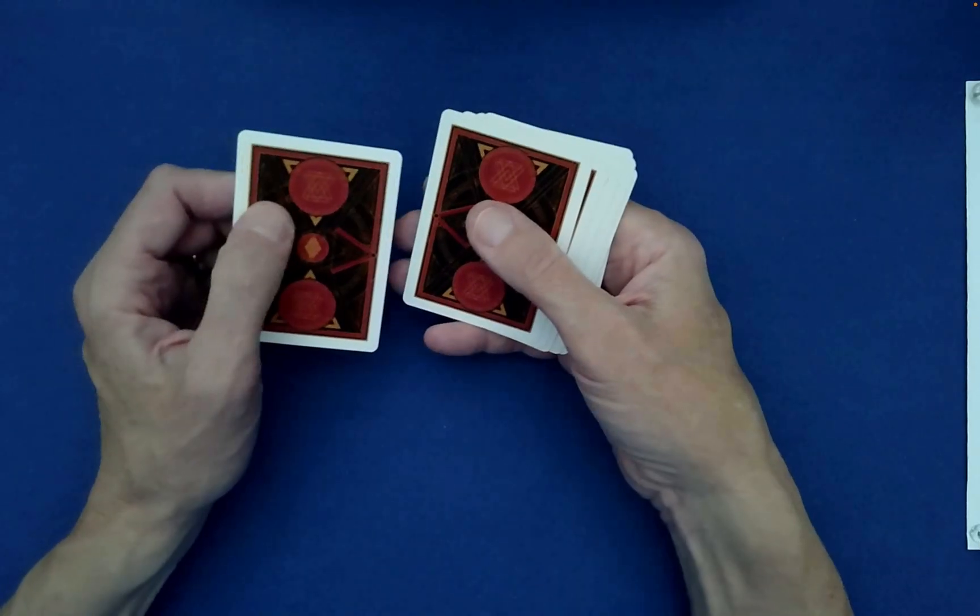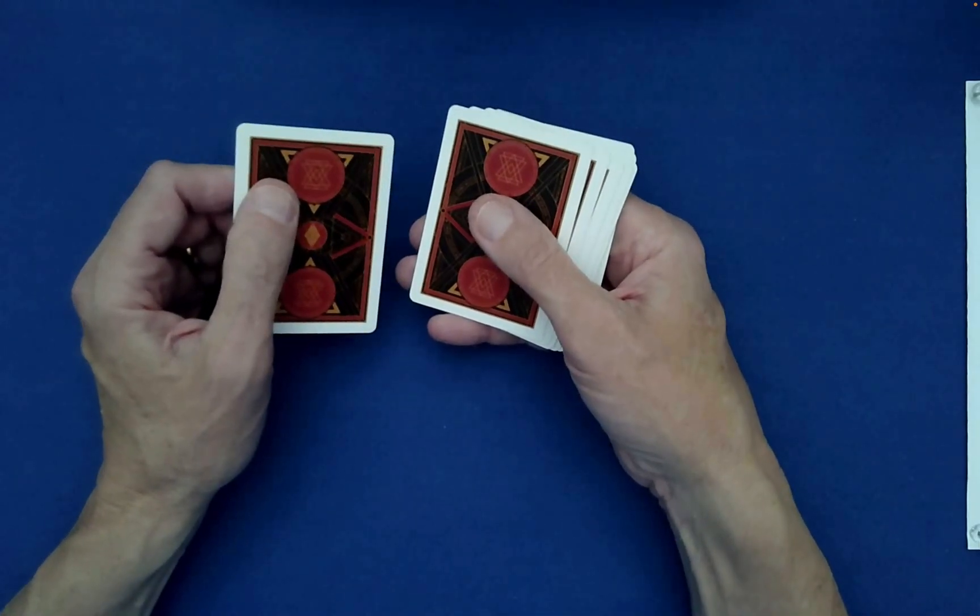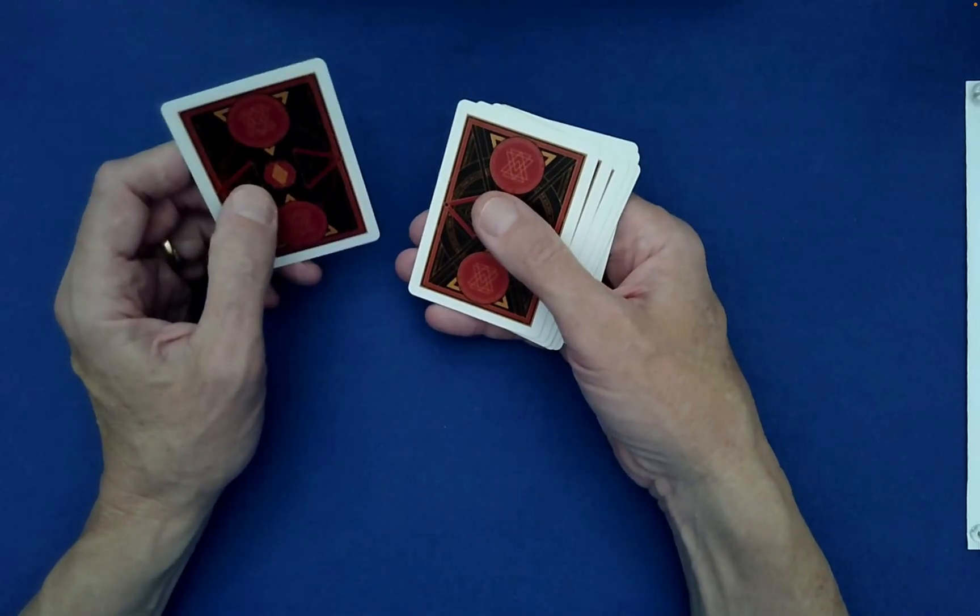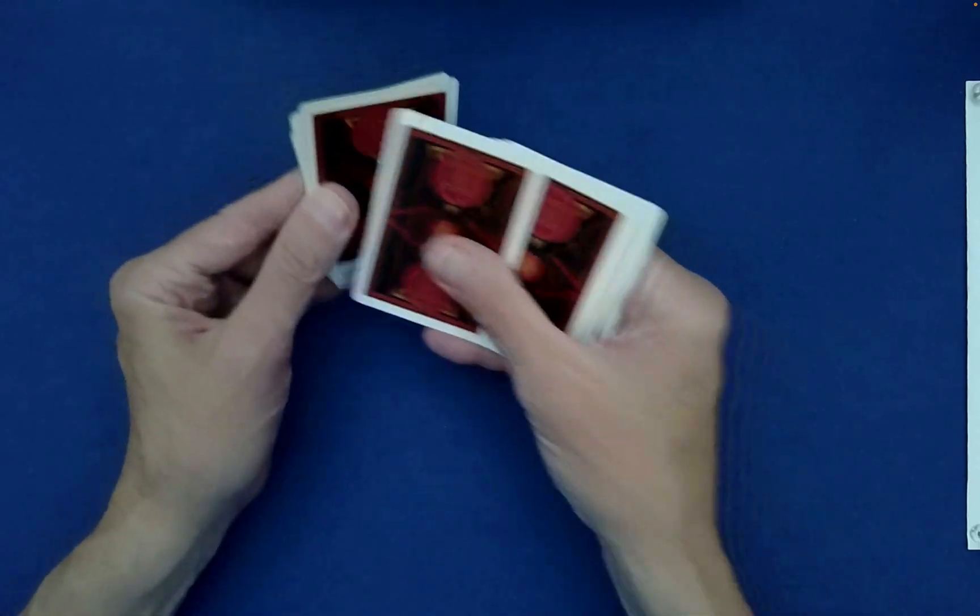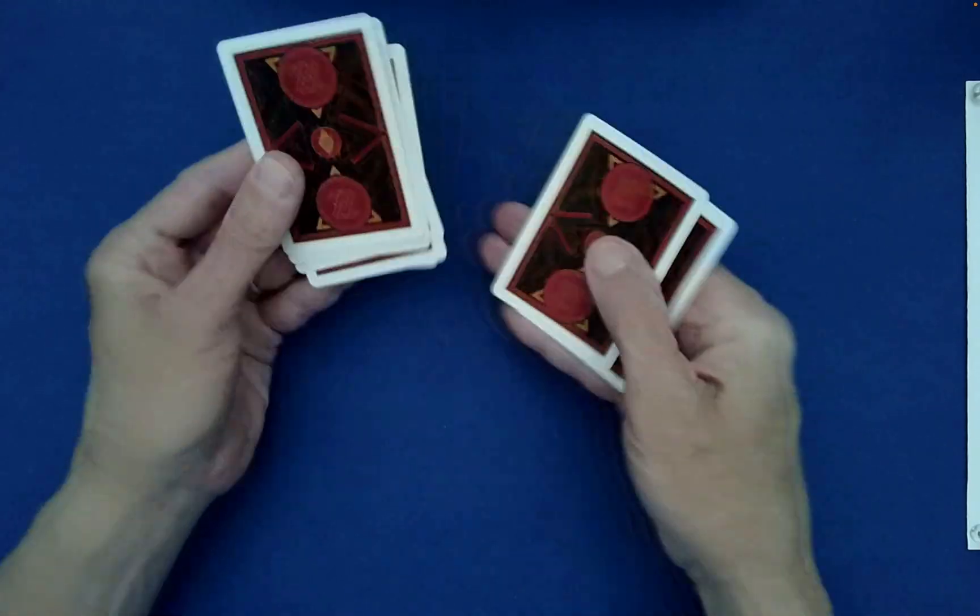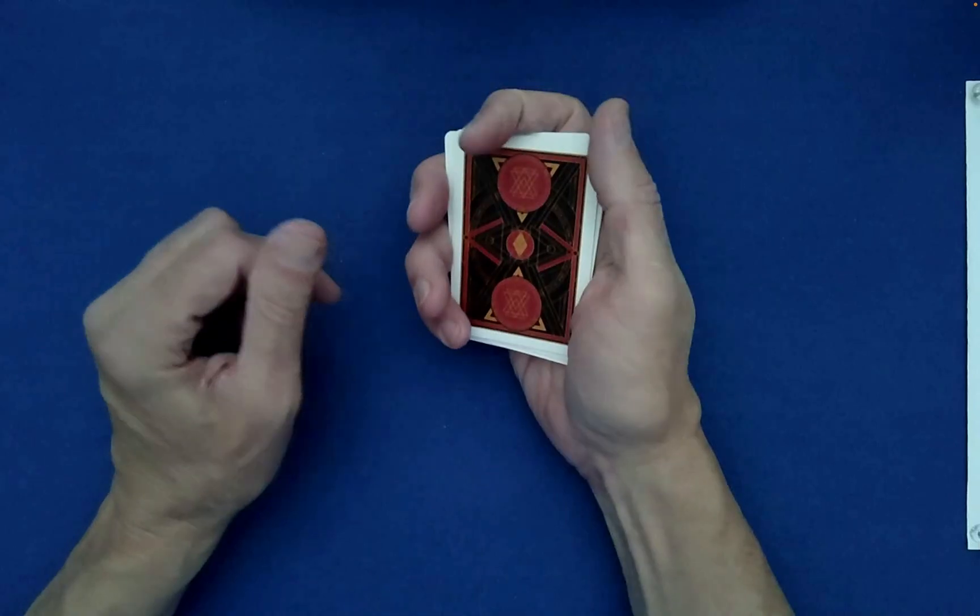From there, we can do a mange over-under or under-over. Which one would you like? You want an over-under? Okay, so what you do is you go over, under, over, under, over, under, over. Very good.